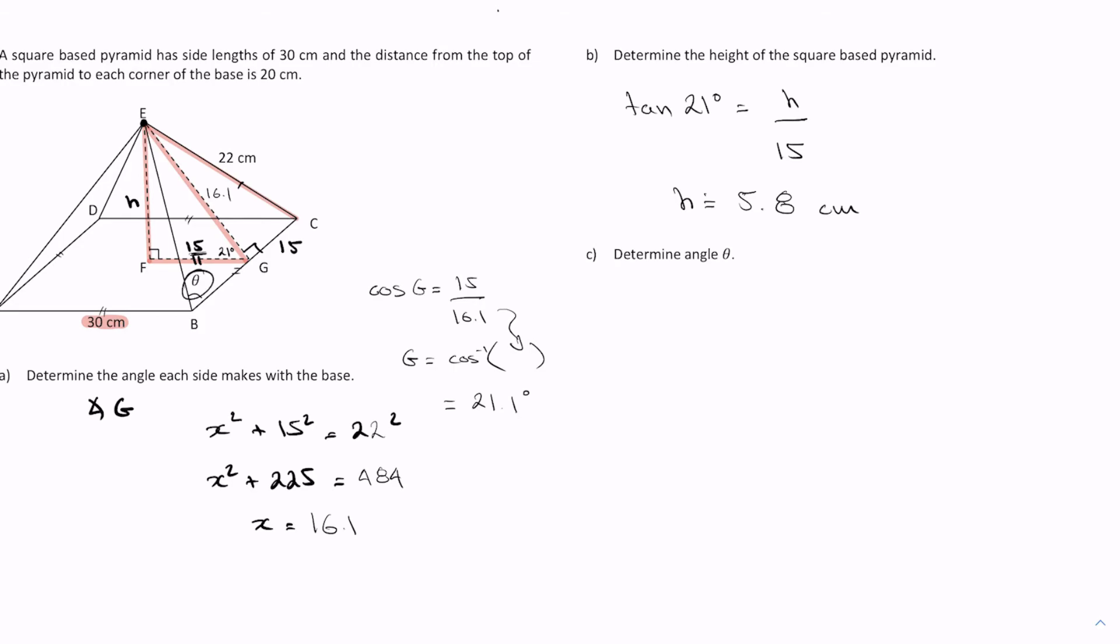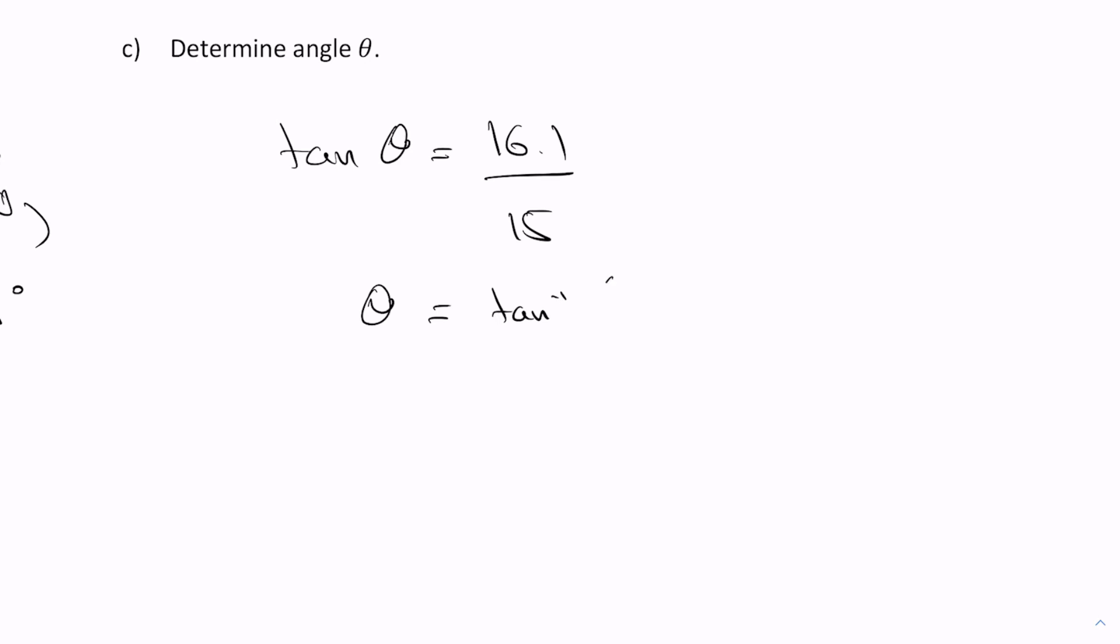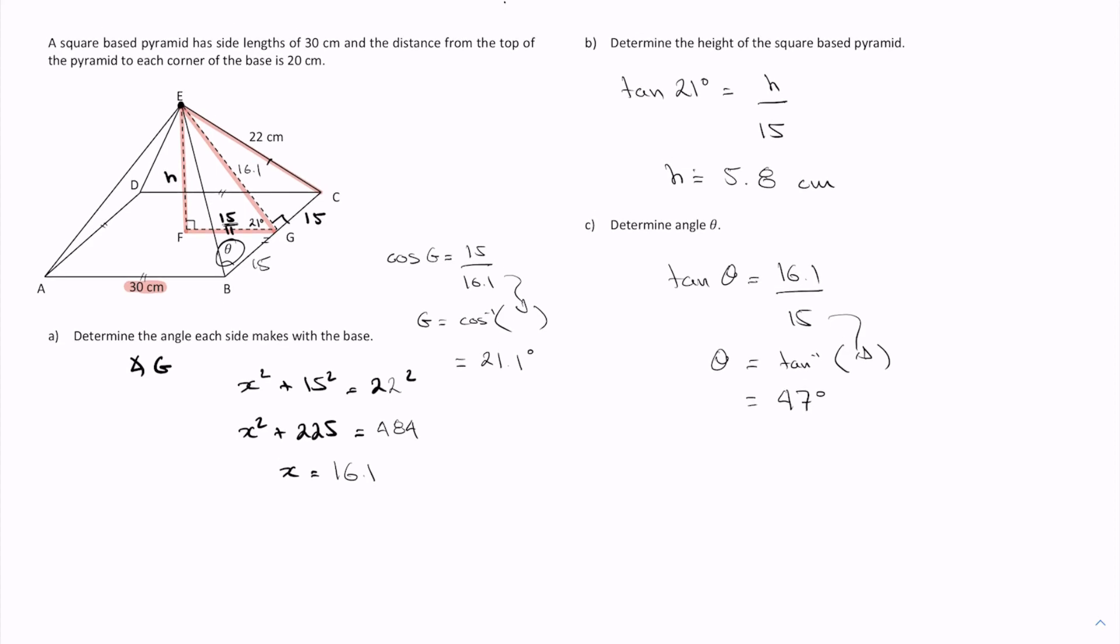Finally, angle theta—that's this guy over here. I think we again have enough information. That's 15 as well over here. I can just use this side triangle with tan inverse. Tan theta is going to be 16.1 over 15. Theta equals tan inverse of whatever that is. I get 47 degrees.